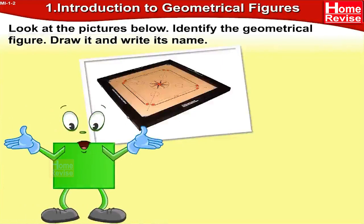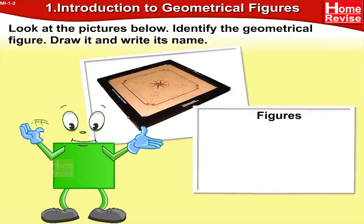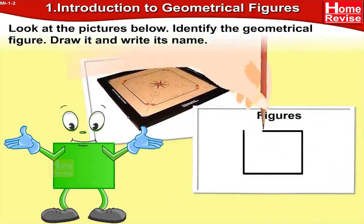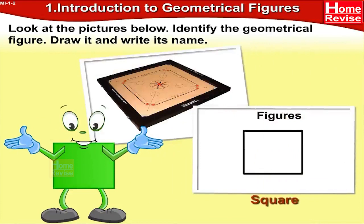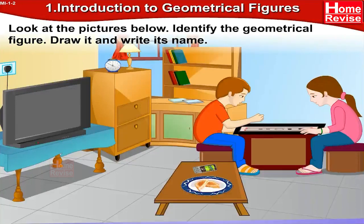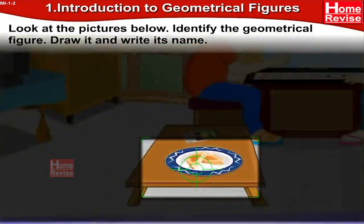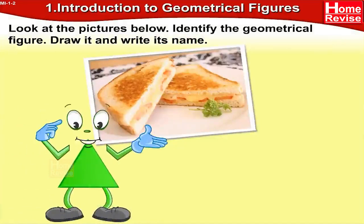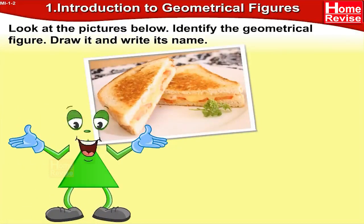Now this is a carom board. The carom board has a square as its geometrical figure, so we will draw a square over here. The name of the figure is square.